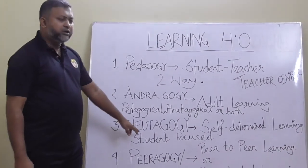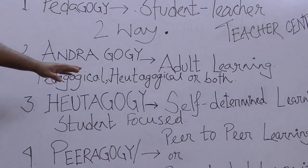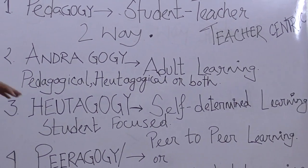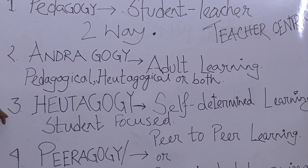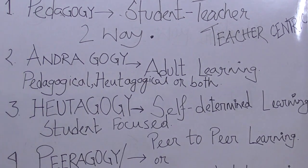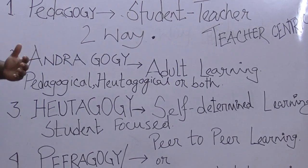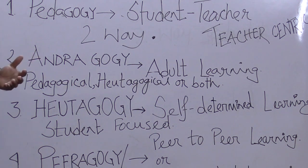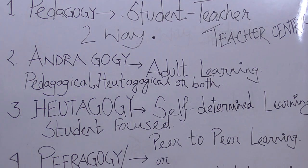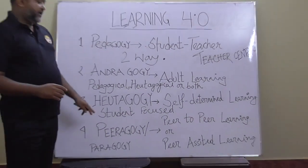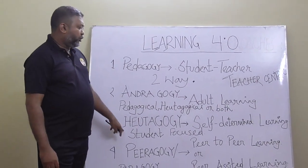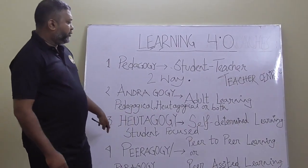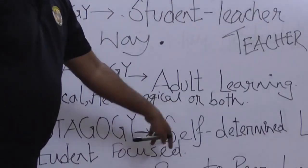The third approach is called heutagogy, otherwise known as self-determined learning. It is also a process to teach adults; it is student-focused or student-centric — the students fix the pace, fix the teacher, and fix the subject of the learning. In this approach, the student is main and the teacher is a helping force. So heutagogy means self-determined learning for adults.